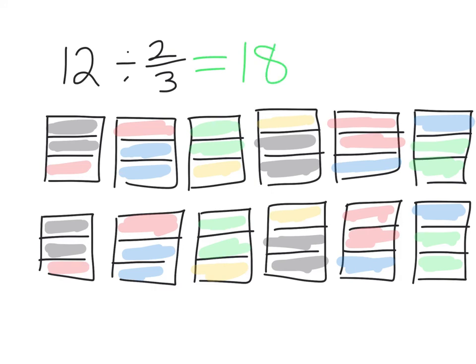One thing I'll always remind you to do is think about whether your answer makes sense or is reasonable. Here, we should recognize that our answer should be over 12 because we're starting with 12 but making groups that are less than 1. For example, 12 divided by 1 would be 12, so we should have at least 12 groups. Or if I divided 12 in half — which is less than 2 thirds — that would be 2 per every item, giving 24. So 18 seems like a really reasonable answer in this situation.